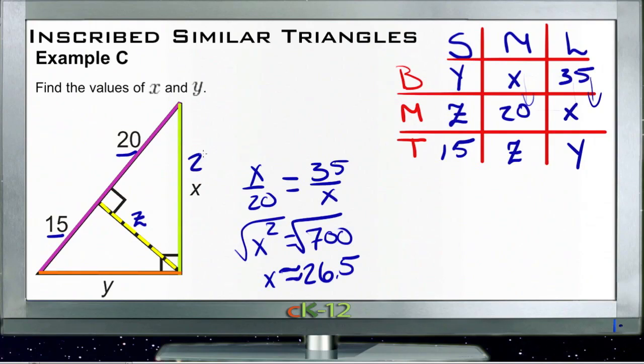So that gives us this side here—that's one of the ones we wanted. And then for y, we just need another comparison that has y in it. Well, now we know x, so we can throw it in. Let's just move on down. Let's take this comparison right here. These two and... nope, I don't want to do that one because I don't know the next one over. I don't know z.